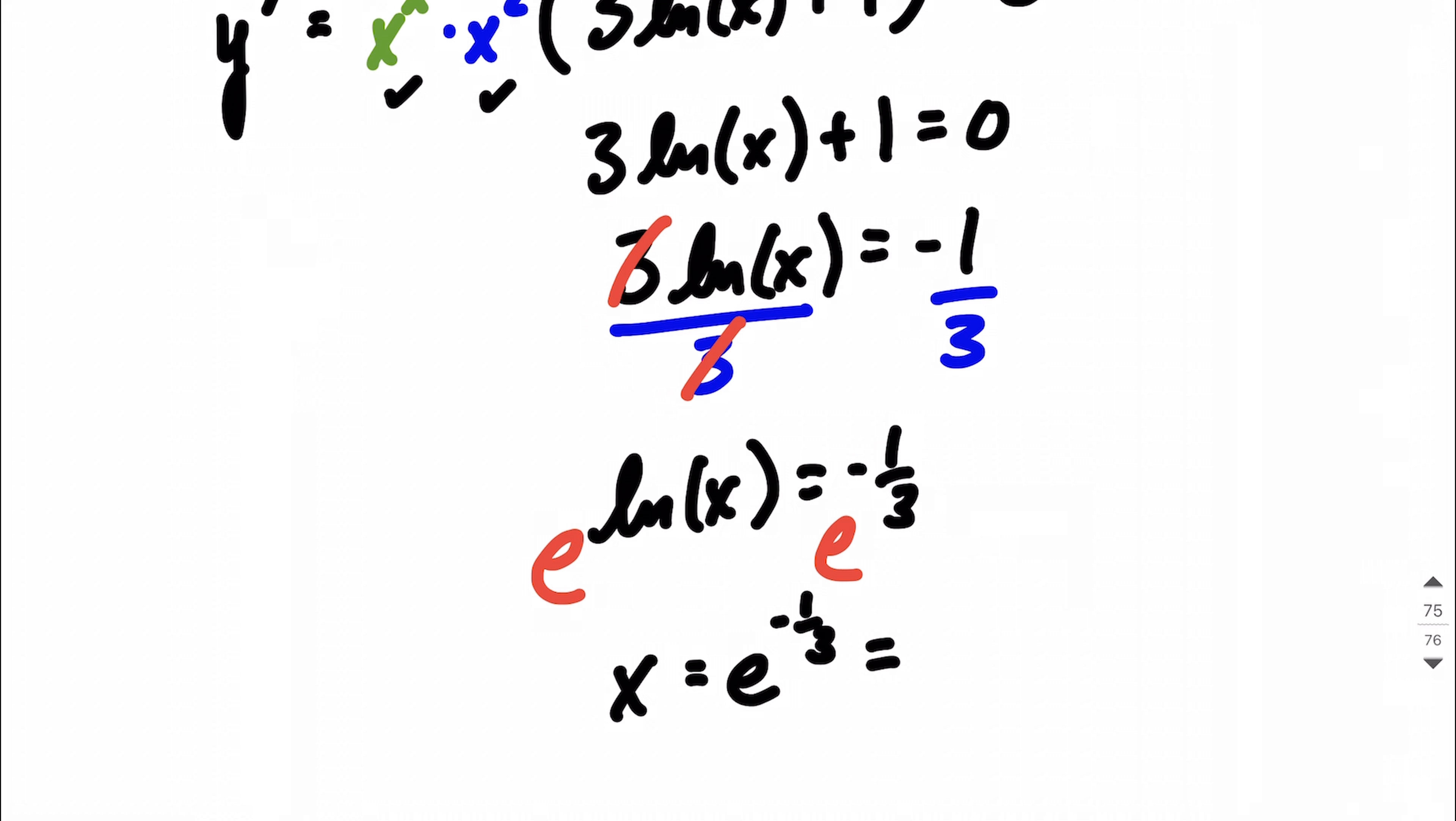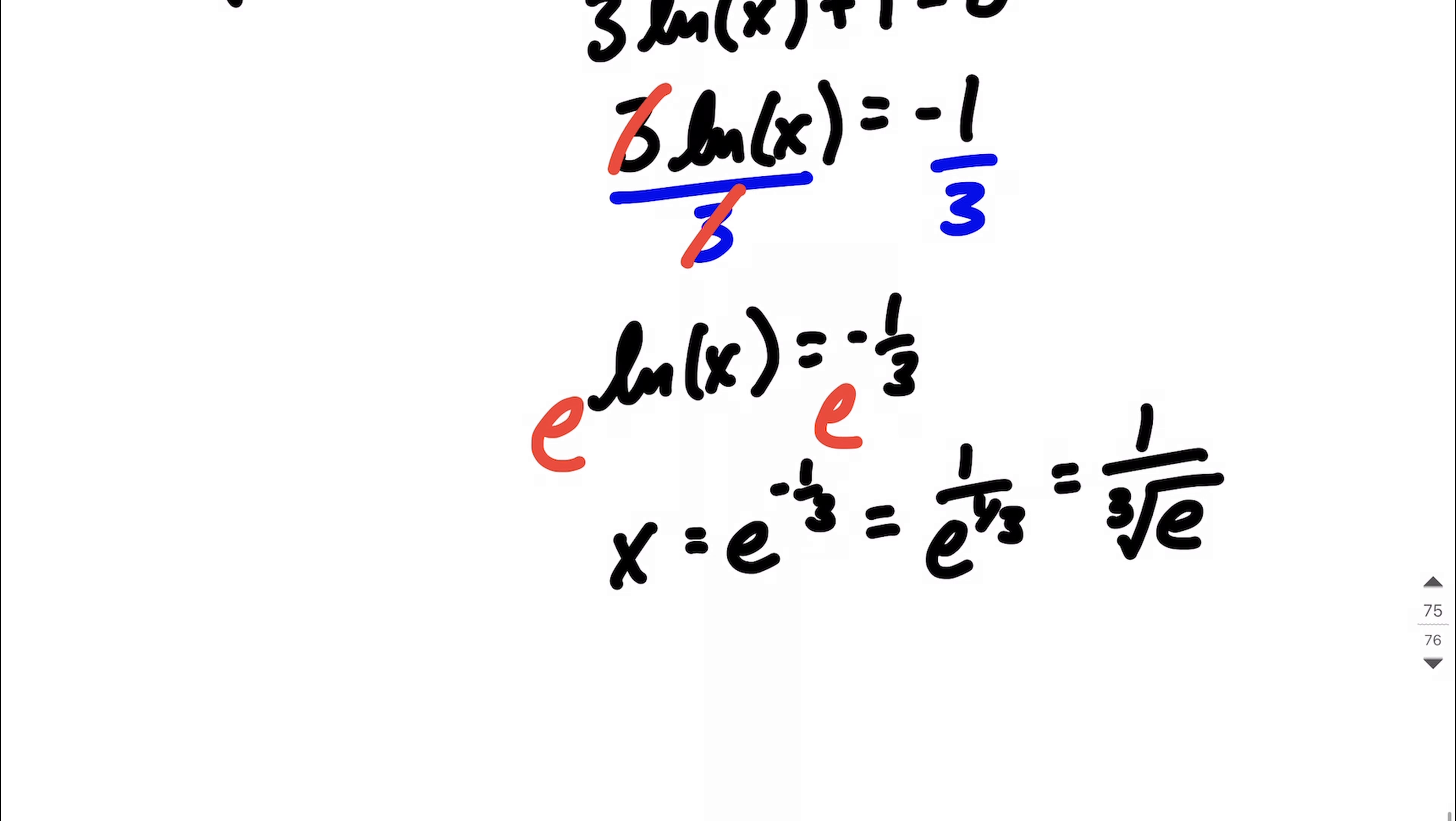If you wanted to see that without the negative exponent, we would go 1 over e to the positive 1 third power, or equivalently, that could be thought of as 1 over the cube root of e to the first power. If we get our calculators out, put this into our calculator, you'll notice that we get approximately 0.7165.